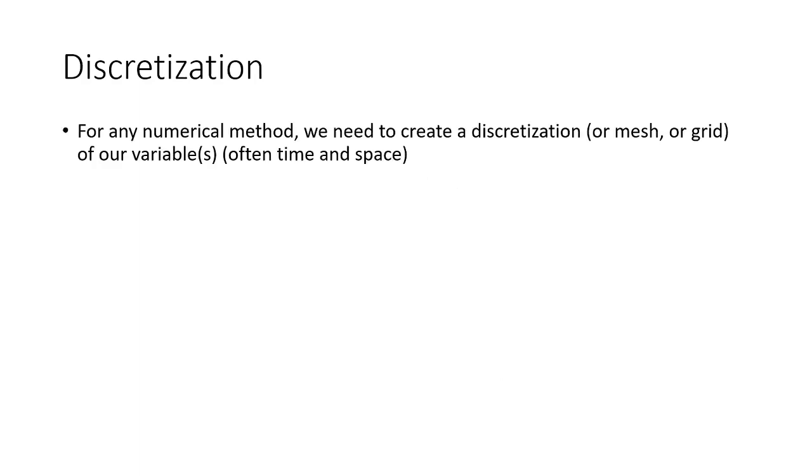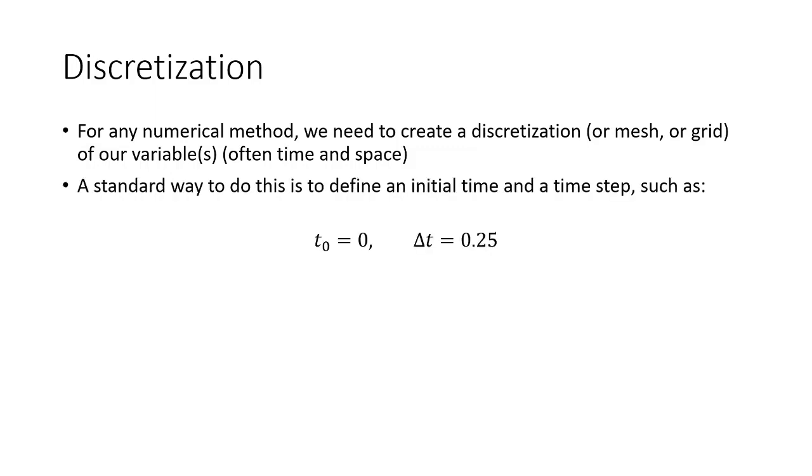So one of the most important steps in solving any kind of numerical method is creating a discretization, also known as a mesh or a grid, of our variables. In this case, that's going to be time. It could also be space. Basically, we're going to break up our variable into a number of discrete points. And at each point, we're then going to solve our equation using one of these numerical methods.